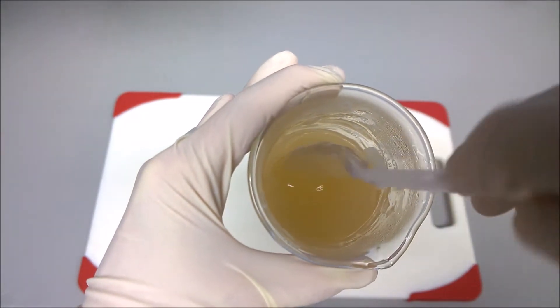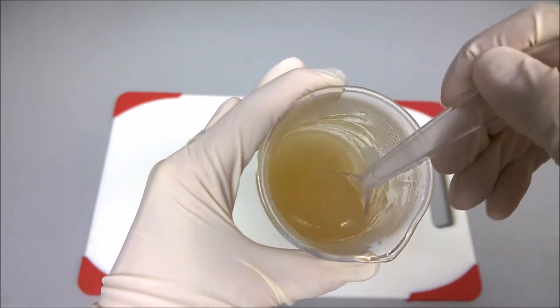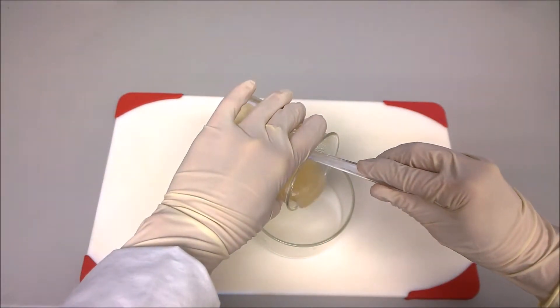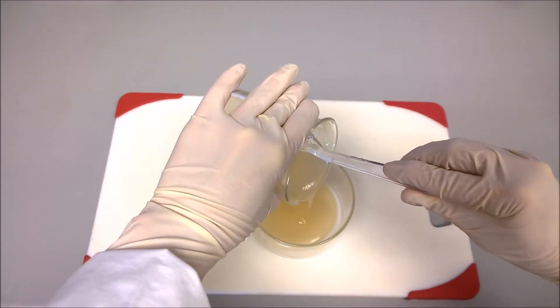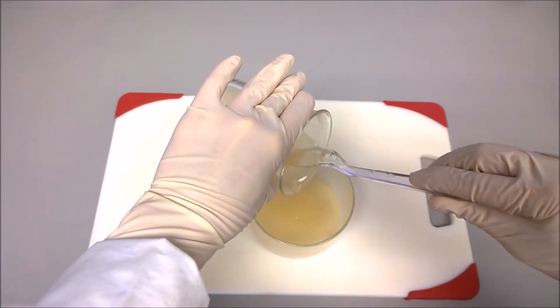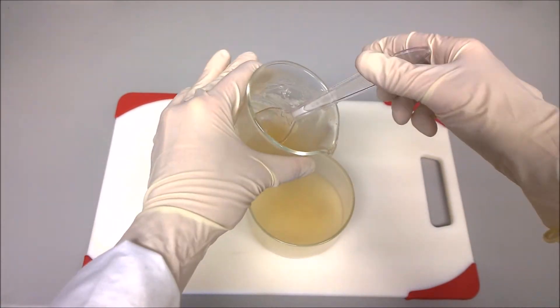Stir the mixture for a minute and then pour in a petri dish to obtain an ideal 3 millimeter thickness. Let it cool down for 15 minutes at room temperature.